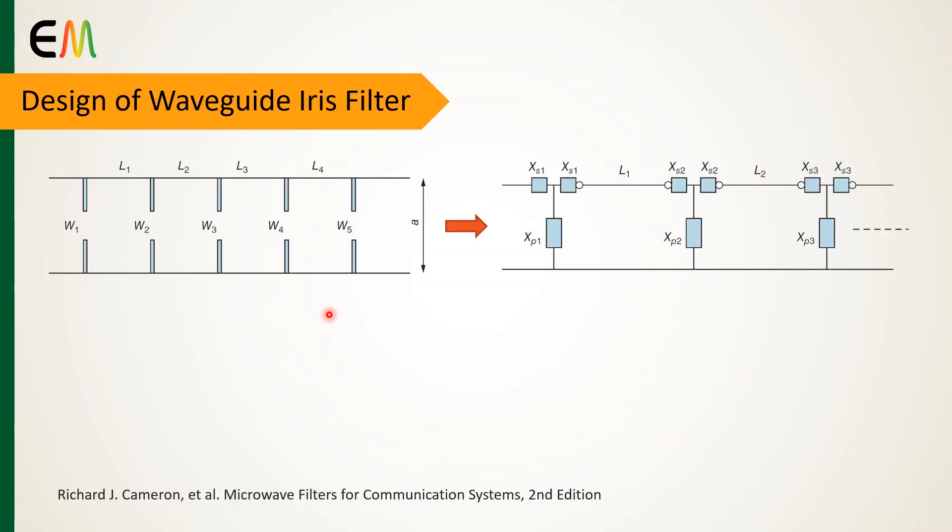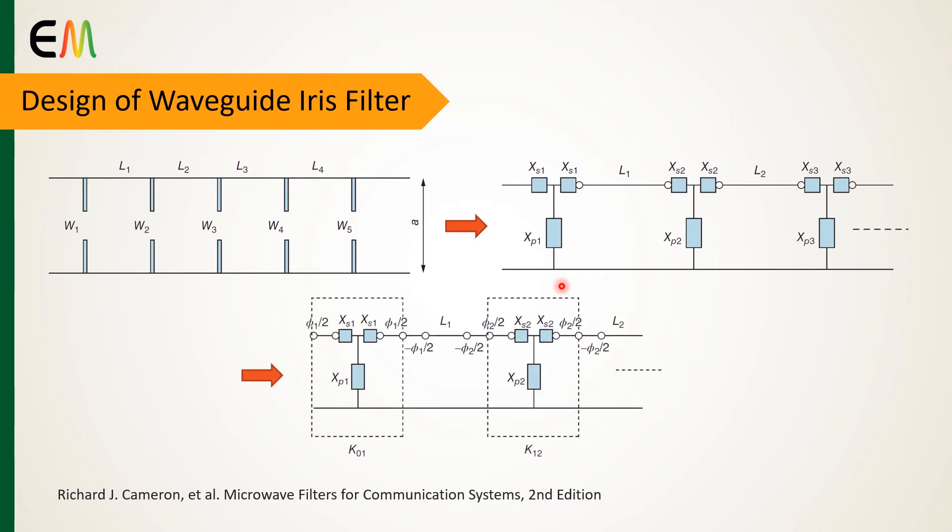In general, each iris of the considered filter is modeled by a T network that is composed of two series inductances denoted by Xs and a shunt inductance denoted by Xp. To arrange the circuit in the form of the K inverter impedance model, this circuit is considered.